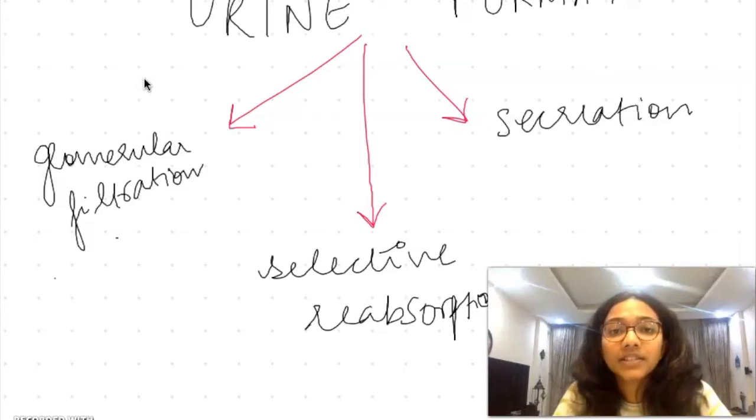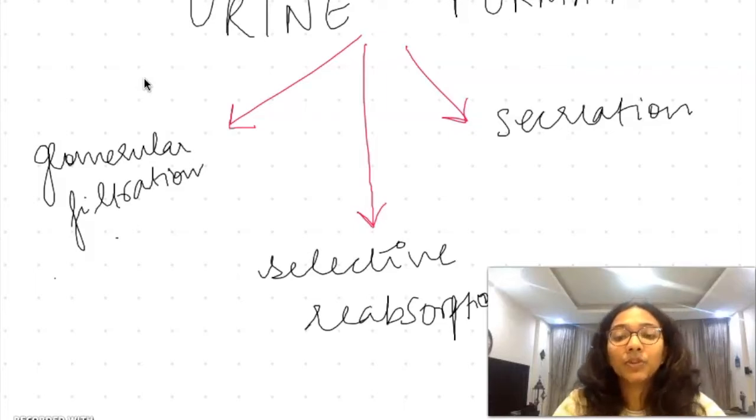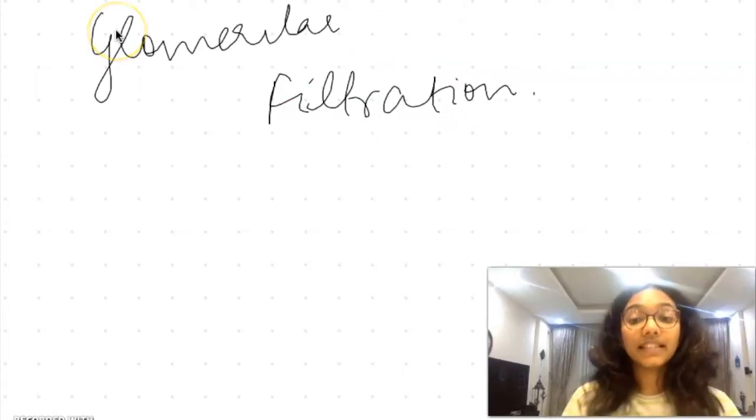The afferent arteriole has urea mixed with blood. The urea and other waste products are separated from the blood. This whole process is known as urine formation. It has three main processes: first is glomerular filtration, second is selective reabsorption, and third is secretion. Glomerular filtration takes place in the Malpighian corpuscle part of the nephron, and selective reabsorption and secretion take place in the loop of Henle, PCT, and DCT.